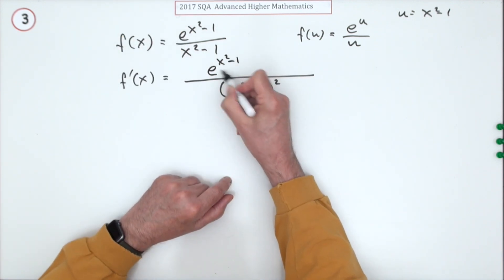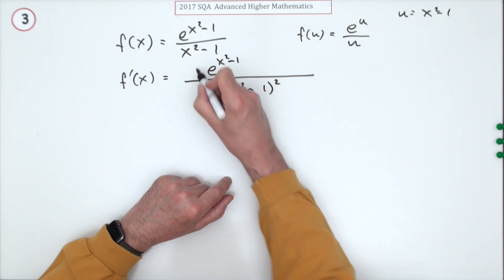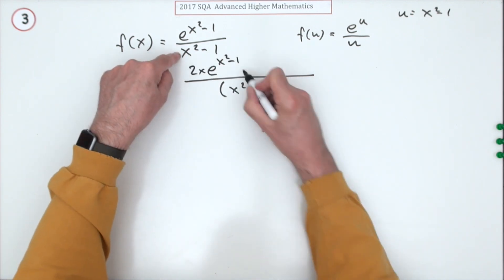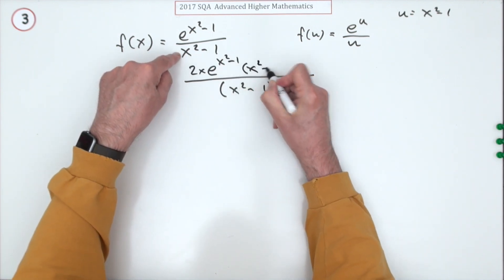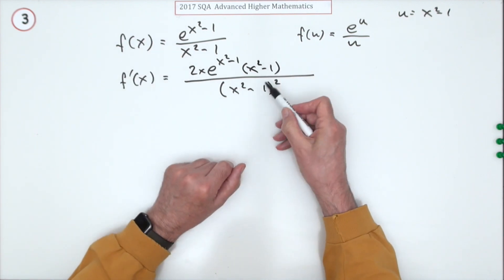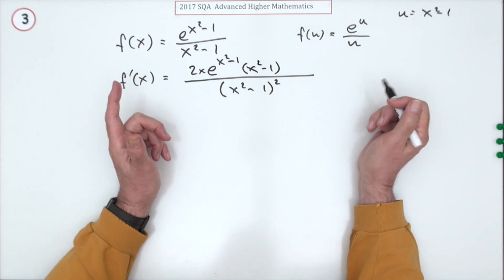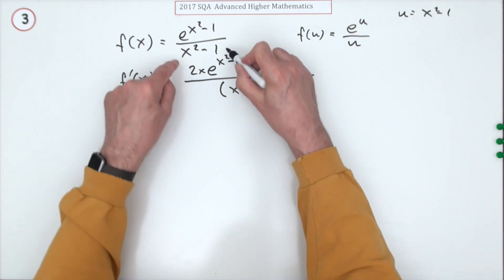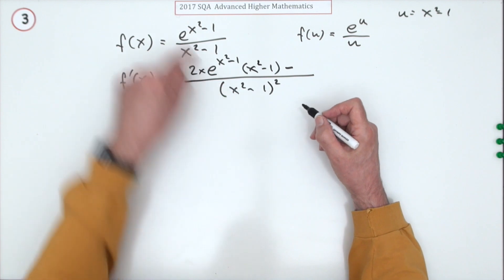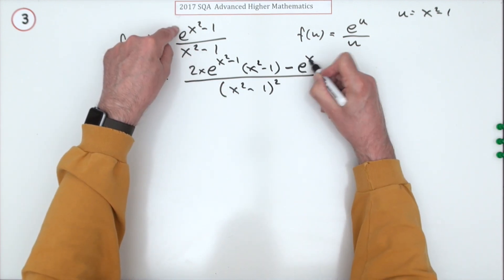e to the something stays as e to whatever it was, but gets multiplied by the inner derivative, which is 2x. So it's 2x times e^(x² - 1) times (x² - 1). That's the only advantage of the u business - you'd just write u, u, u, so it saves time.